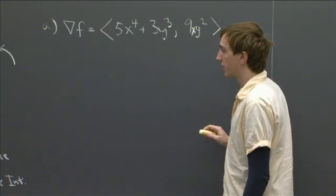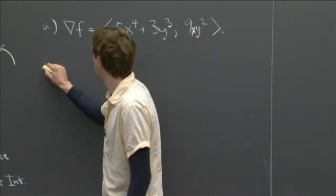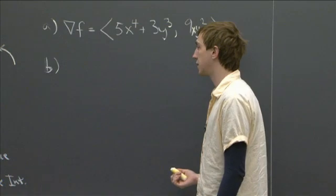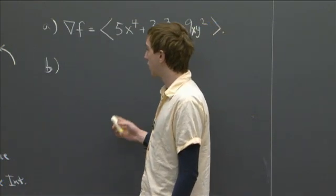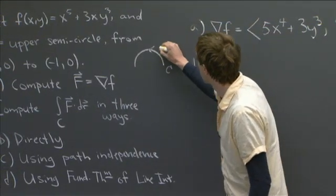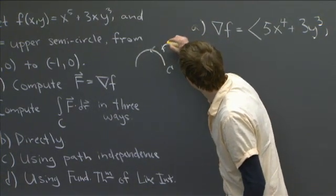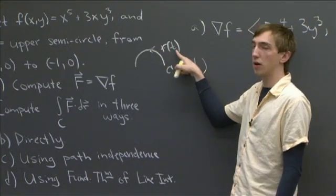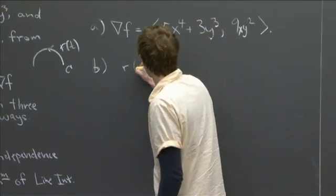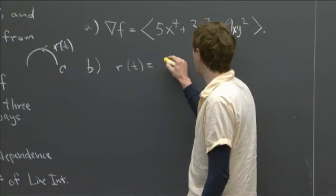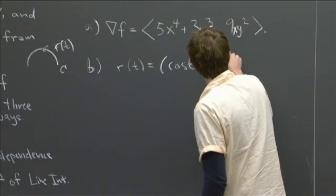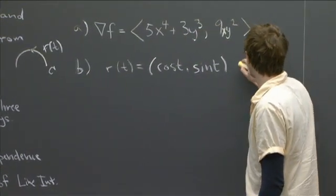So now for part b, we're asked to compute this integral directly. So we have to recall what it means. So first of all, if we go back over here, we have this curve c. And we need to give a parameterization for it. And so we're going to introduce a parameterization r of a variable t. And we're going to use that to do our computations. So let's set r of t. So this is our usual circle that we're used to working with. So we're just going to take the usual parametrization, cos t and sin t.